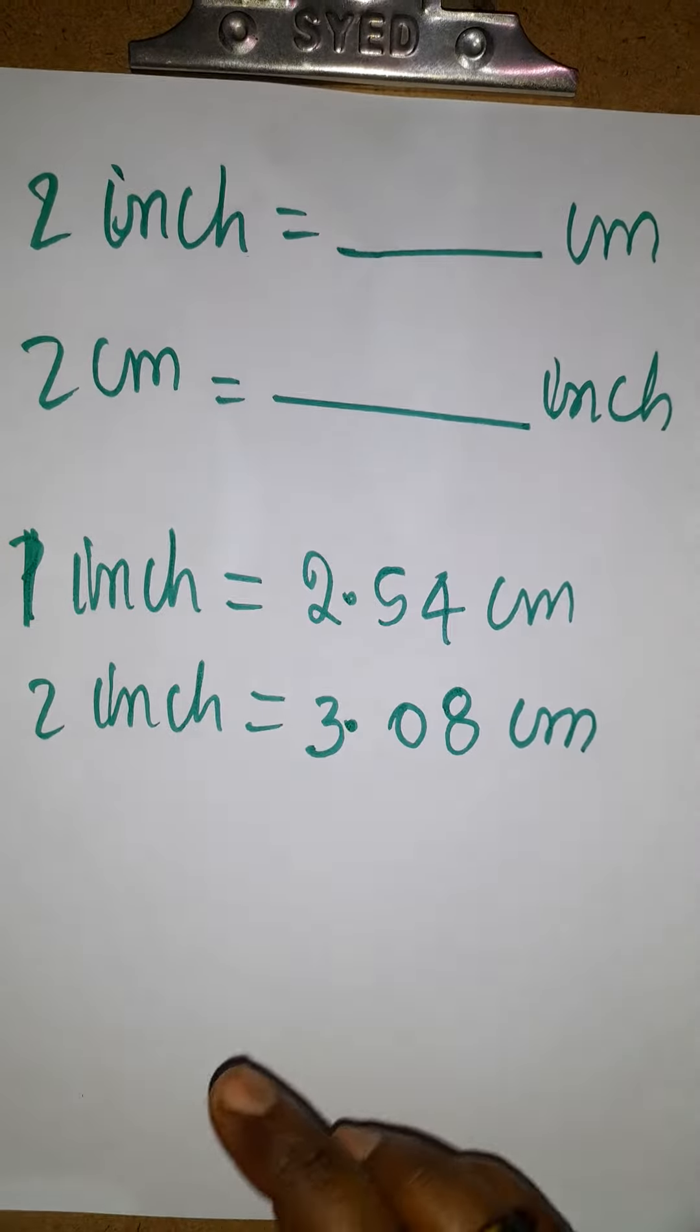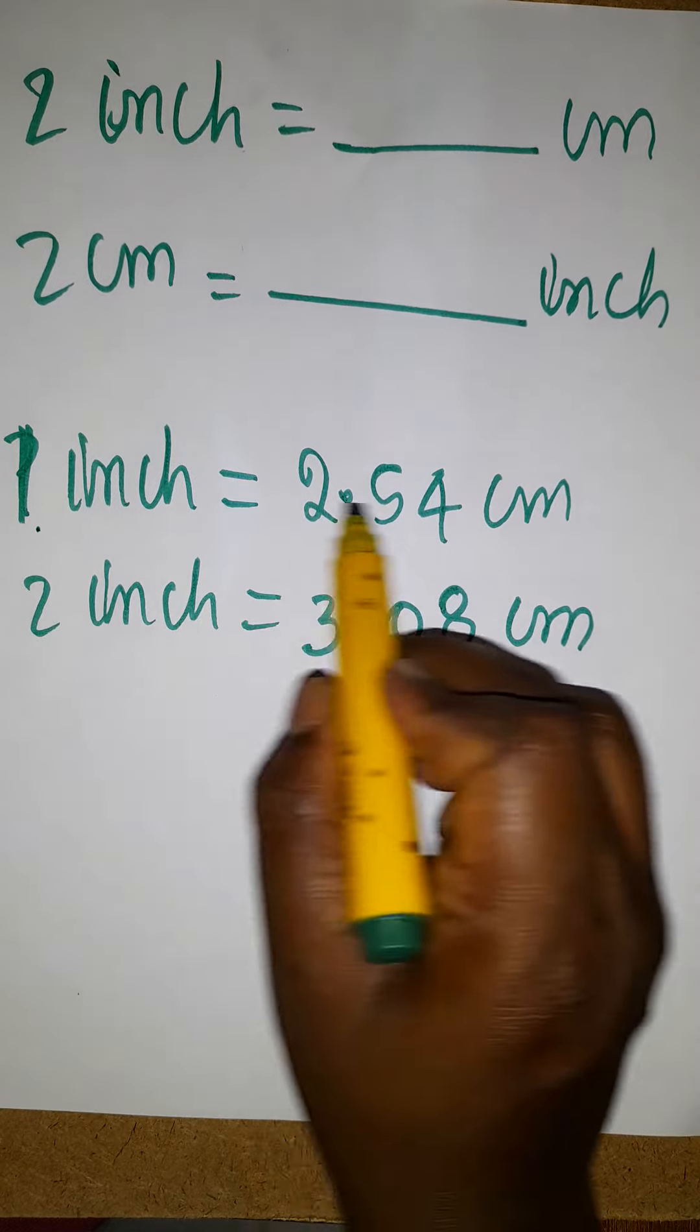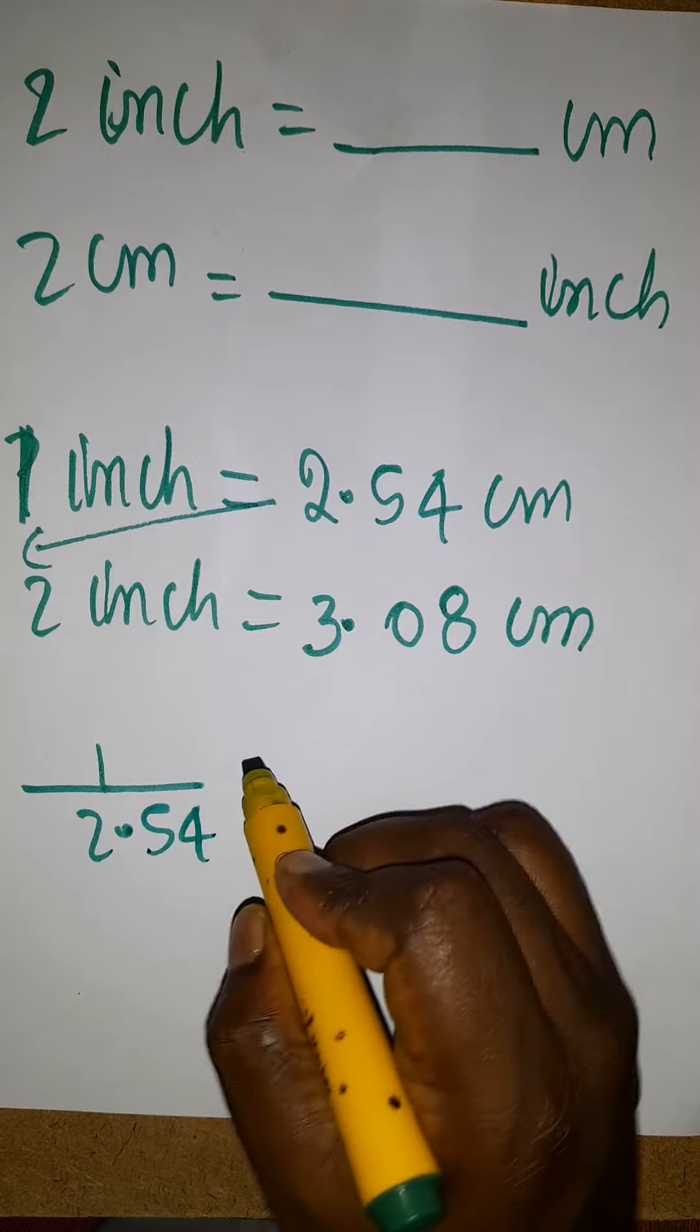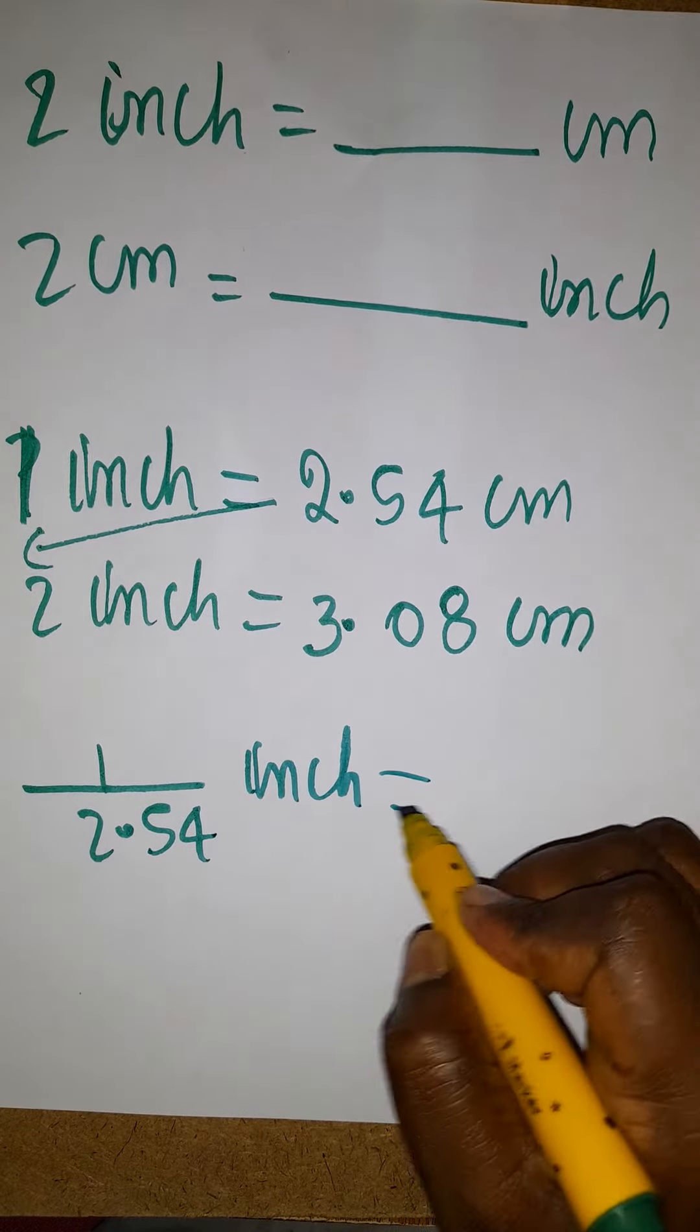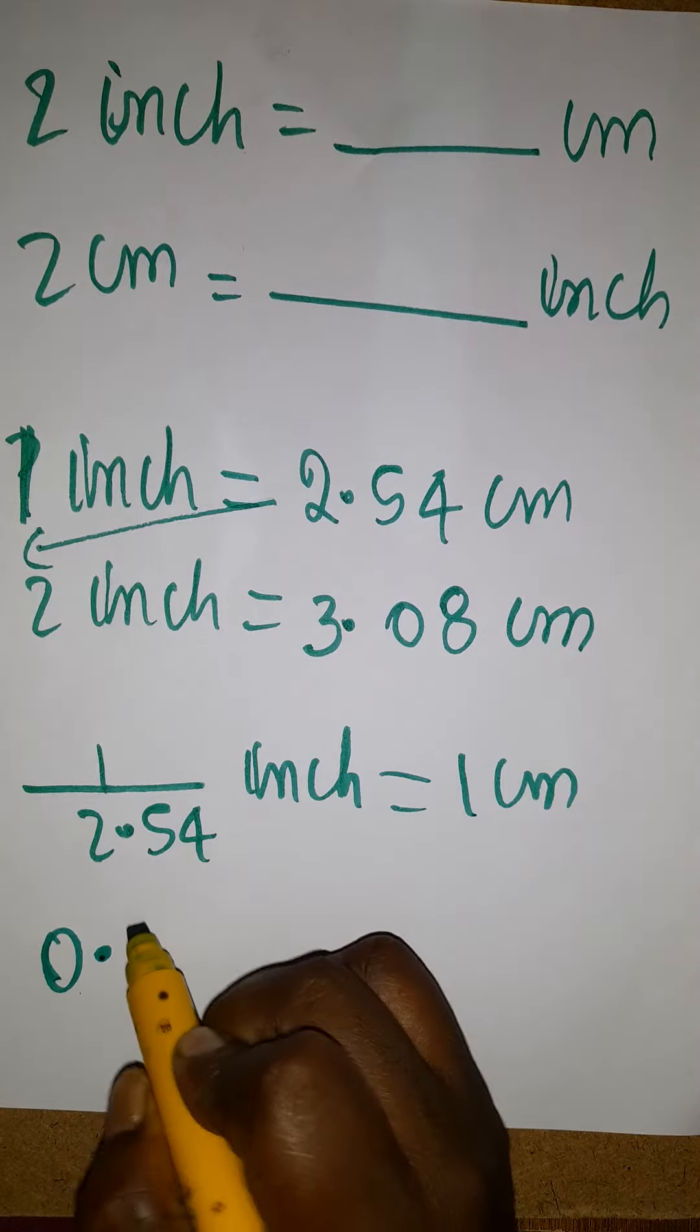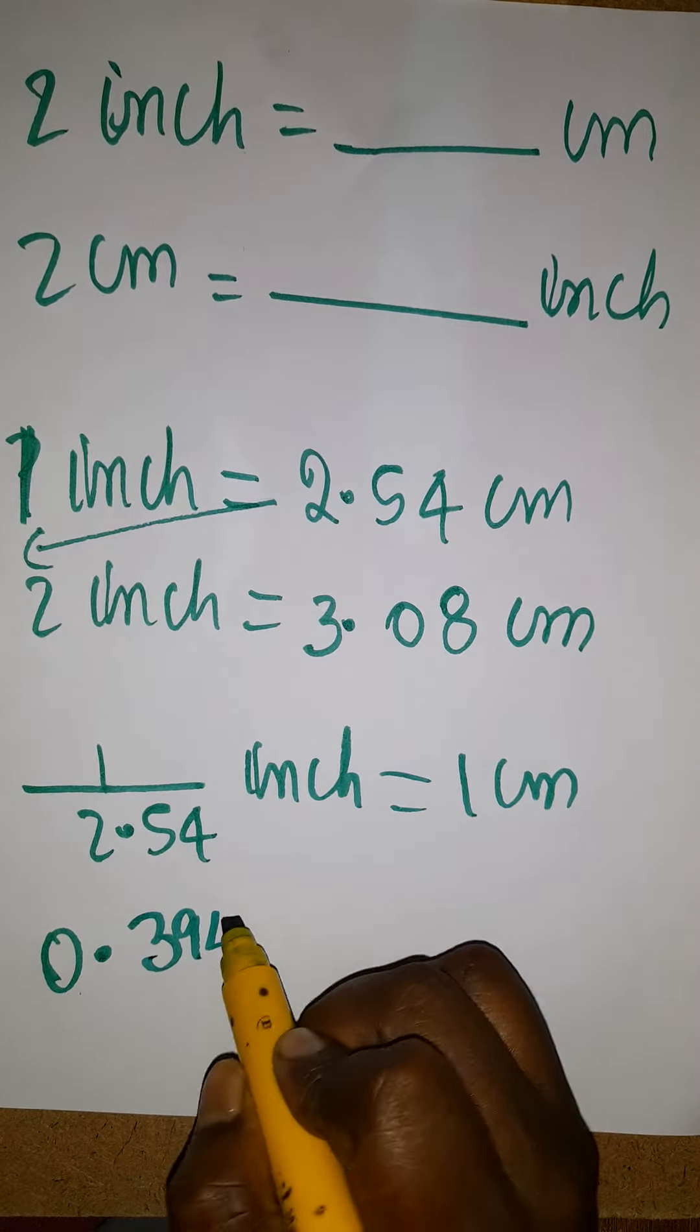We know already one inch is 2.54 centimeters. We can bring this to the denominator: 1 divided by 2.54 inches equals 1 centimeter. This calculation will give us 0.394 inches equals 1 centimeter.